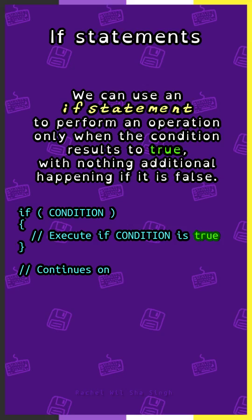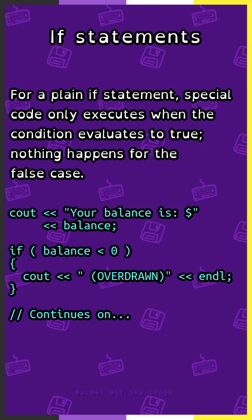We can use an if statement to perform an operation only when the condition results to true, with nothing additional happening if it is false. For a plain if statement, special code only executes when the condition evaluates to true — nothing happens for the false case.